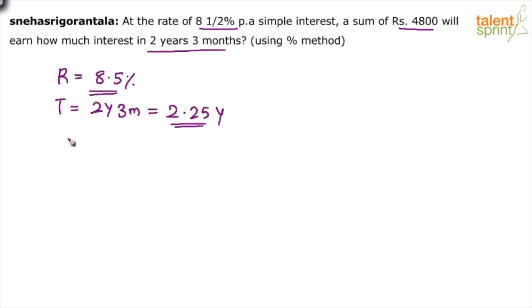You know the rate of interest and you know the time period. Principle is given as 4,800. He is asking us to find out SI. What is complex about it?